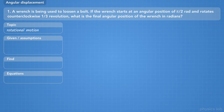A wrench is being used to loosen a bolt. If the wrench starts out at an angular position of pi over 2 radians, and rotates counterclockwise 1 third of a revolution, what is the final angular position of the wrench in radians?